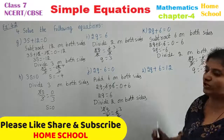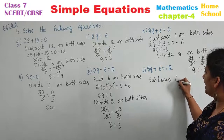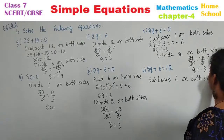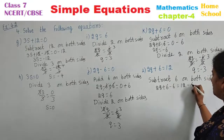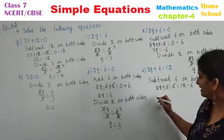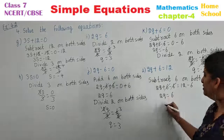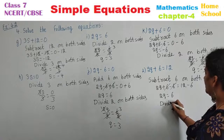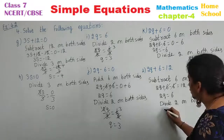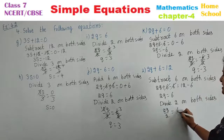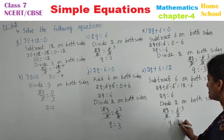Last question in this exercise: 2Q plus 6 is equal to 12. 6 is added here, so we need to subtract. Subtract 6 on both sides. 2Q plus 6 minus 6 is equal to 12 minus 6. Plus 6 minus 6 gets cancelled. 2Q is equal to 6. Last, 2 is multiplied for the variable, so divide with that 2 on both sides. 2Q by 2 is equal to 6 by 2. 2 and 2 cancel, 2 threes are 6. Therefore Q is equal to 3.